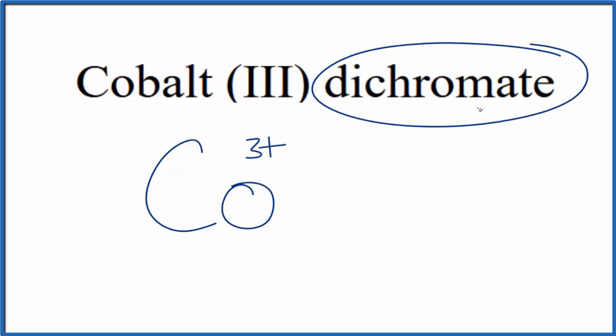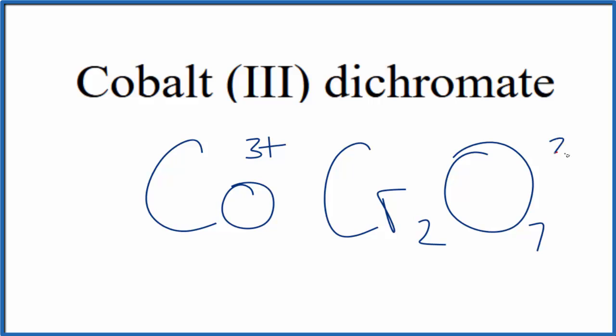The dichromate, you're not going to find that on the periodic table. It ends in ATE, so it's going to be a polyatomic ion. You either memorize that the dichromate ion is Cr2O7, and the whole thing has a 2 minus charge, or if you're allowed, you look it up on a table of polyatomic ions.